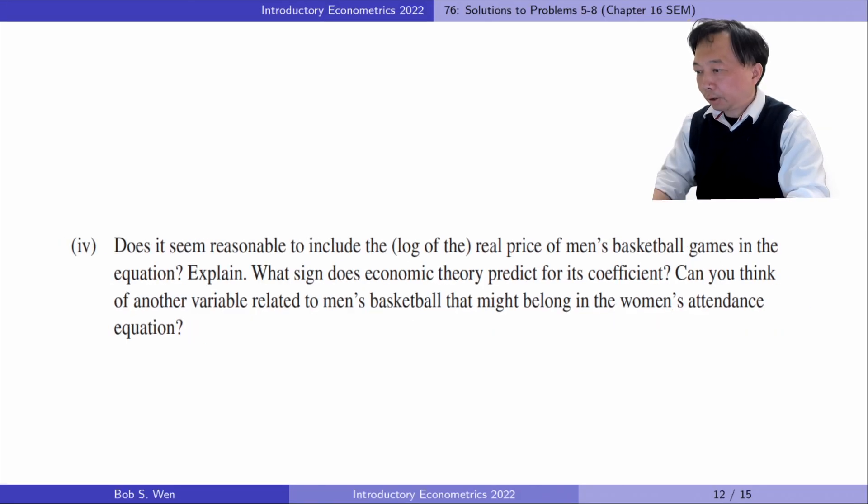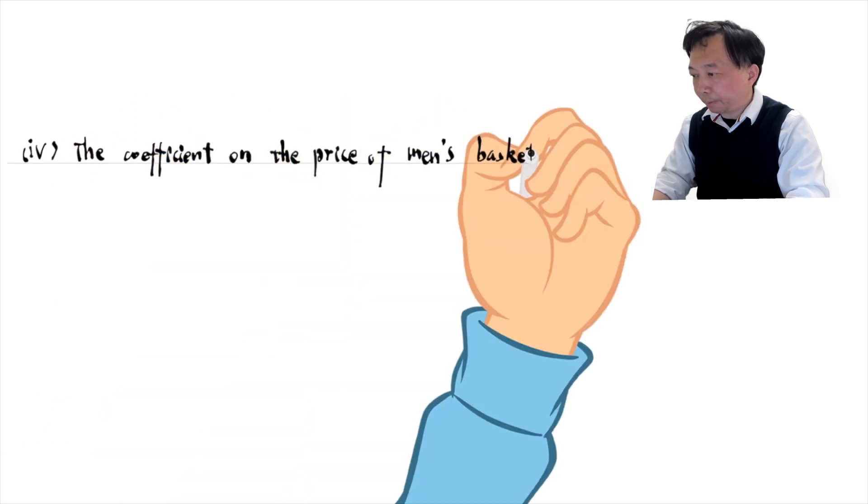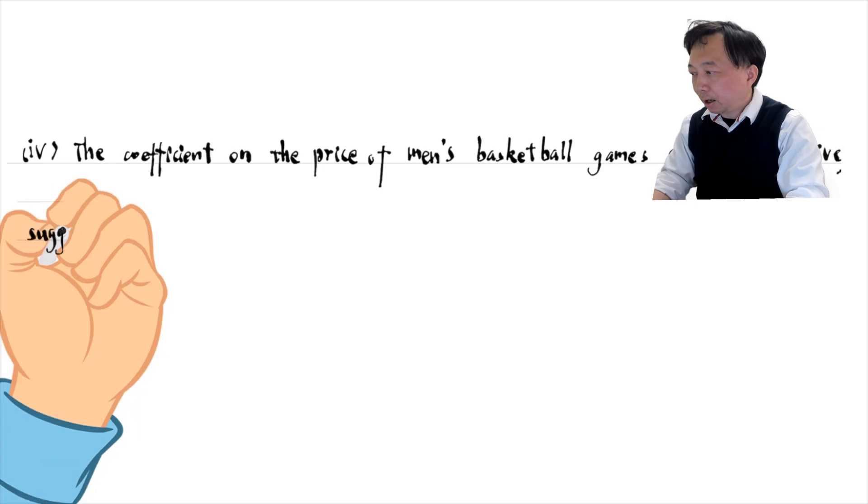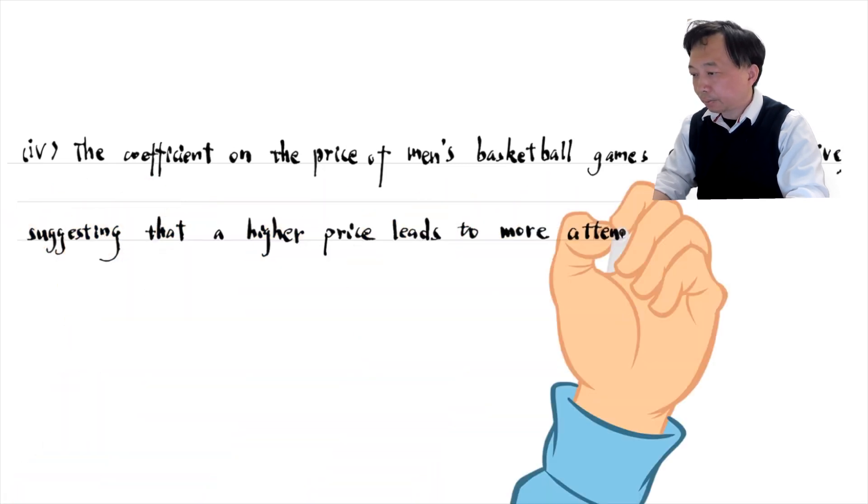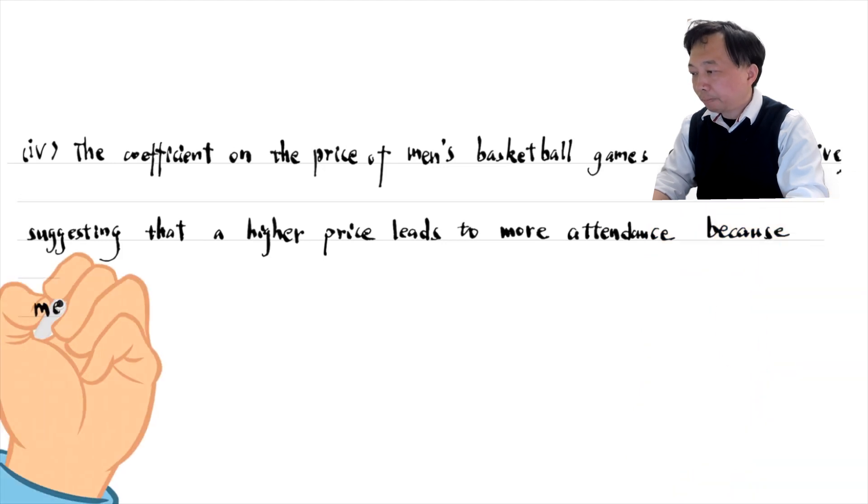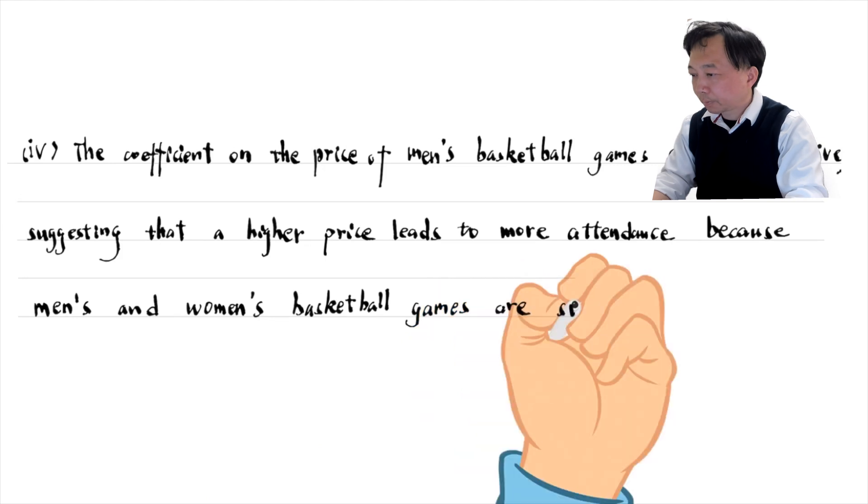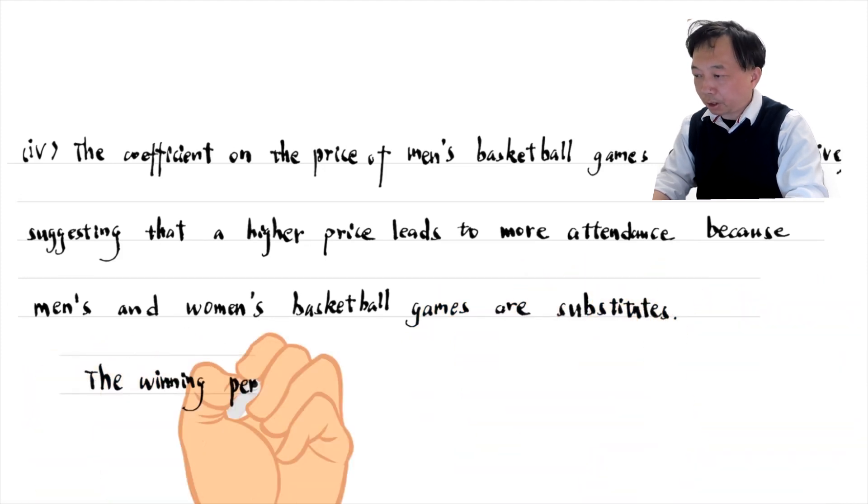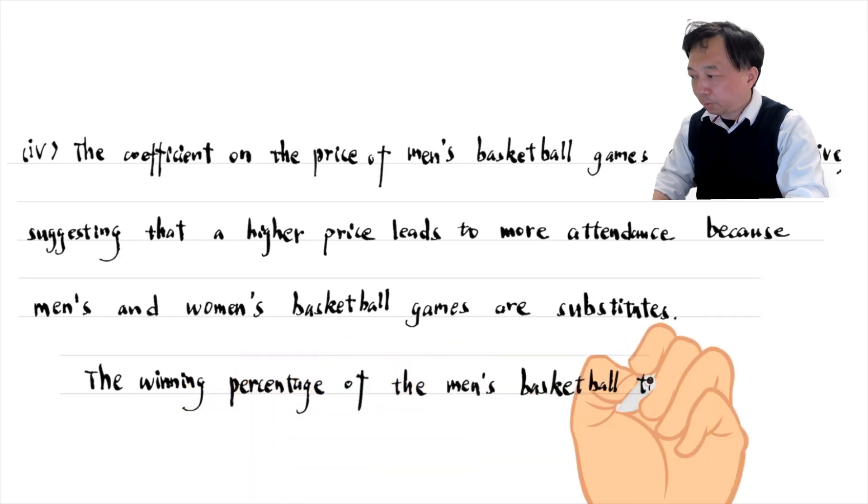In part four, does it seem reasonable to include the log of the real price of men's basketball games in the equation? Explain. What sign does economic theory predict for its coefficient? Can you think of another variable related to men's basketball that might belong to the women's attendance equation? The coefficient on the price of men's basketball games should be positive, suggesting that a higher price leads to more attendance because the men's and the women's basketball games are substitutes. The winning percentage of men's basketball games is another explanatory variable in the women's attendance equation.